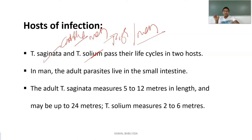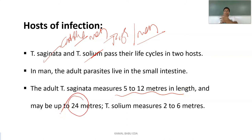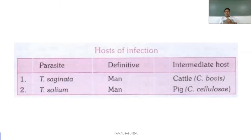Taenia solium measures about 2 to 6 meters in length. In summary, the definitive host for both species is man. The intermediate host for Taenia saginata is cattle — producing Cysticercus bovis — and for Taenia solium it is pigs — producing Cysticercus cellulosae.